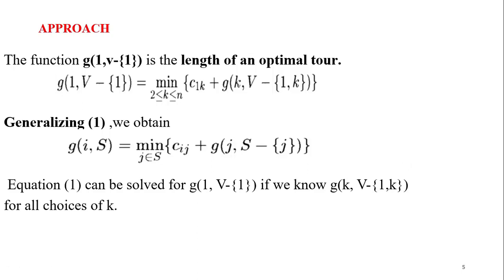The Traveling Salesperson Problem requires finding a minimum cost closed path which covers all the cities exactly once. To solve that problem, we define a function g, which gives the length of an optimal tour — a closed path. In this function, the first parameter is the starting city, that is city one.